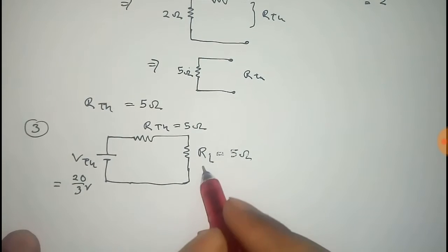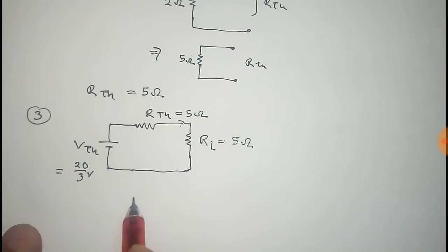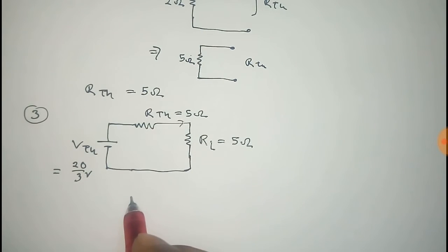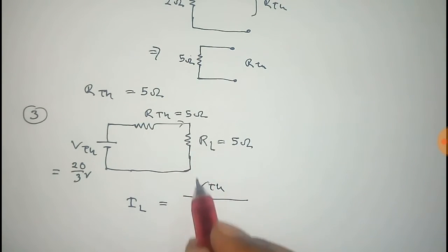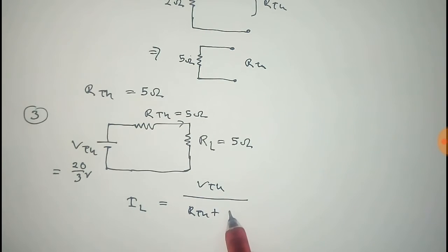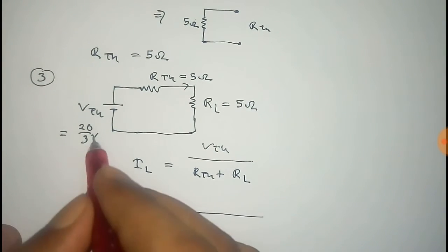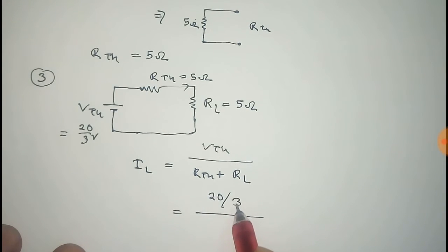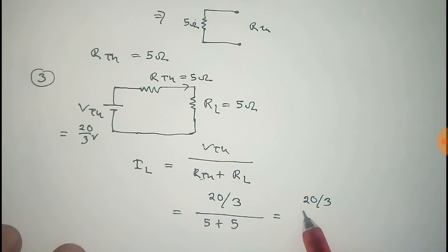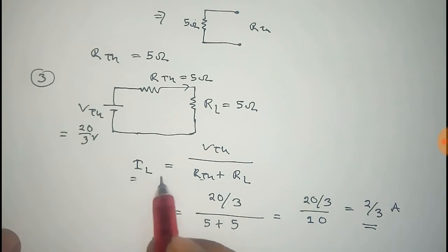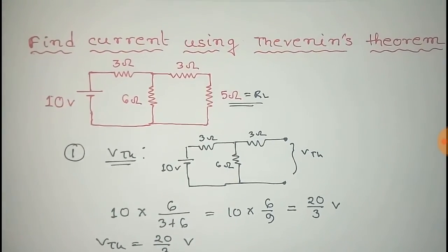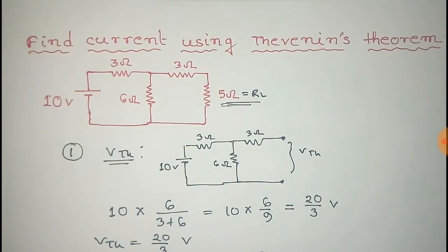Now we have to find the current through this load resistor. The load current IL equals the total voltage, that is Vth = 20/3, divided by the total resistance RTH plus RL. That is 20/3 divided by 5 plus 5, which is 20/3 divided by 10, that equals 2/3. Thus we get the load current, that is 2/3 ampere. In this way, using Thevenin's theorem, we get the value of the current across the load.